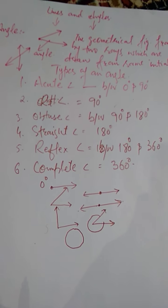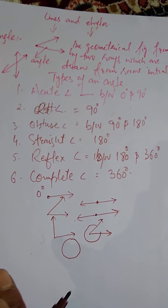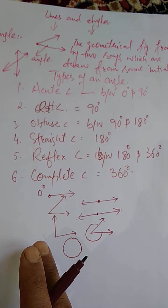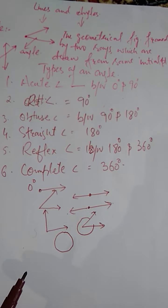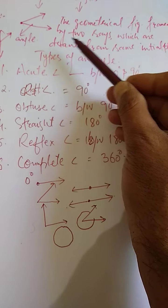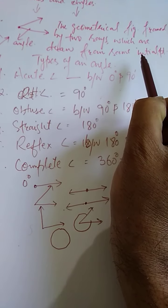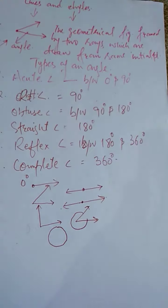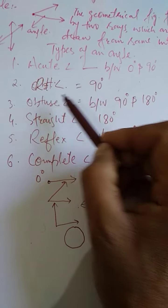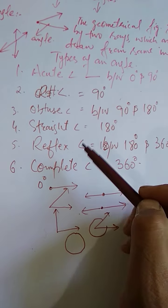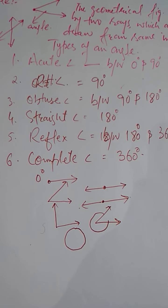This is all about an angle. In the topic of lines and angles, we have already studied lines and pairs of lines. Now we will study angles. An angle is the geometrical figure formed by two rays drawn from the same initial point. The six types of angles are: acute angle, right angle, obtuse angle, straight angle, reflex angle, and complete angle.